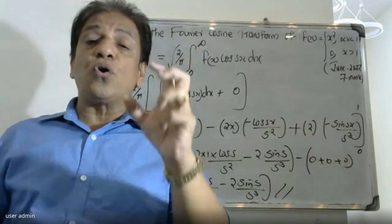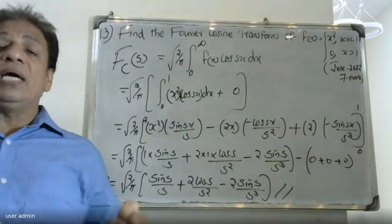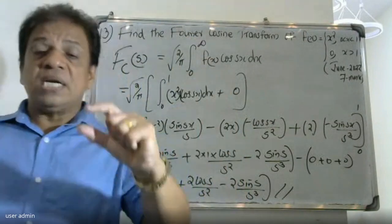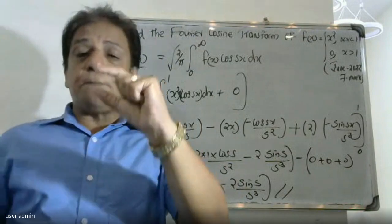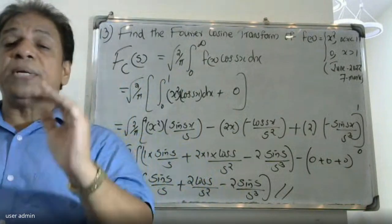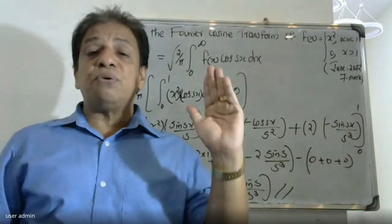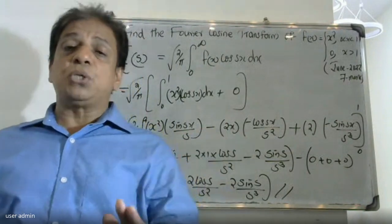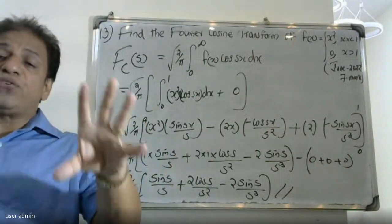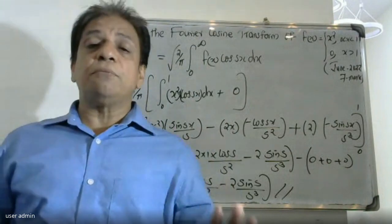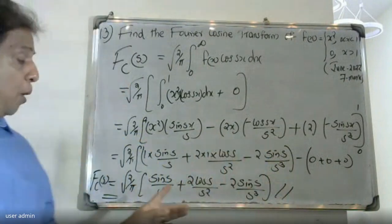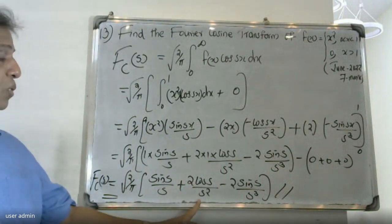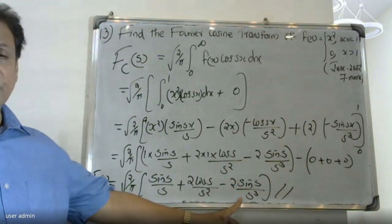The Fourier cosine transform: first function into integral of second, minus derivative of first into integral of second, then plus. The first function is x², and the answer is root of 2 by pi into [sin(s)/s + 2·cos(s)/s² − 2·sin(s)/s²].